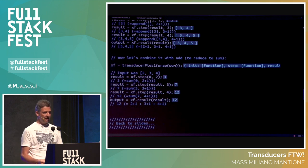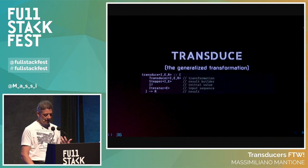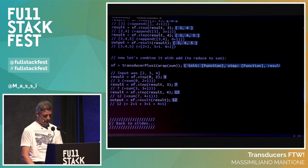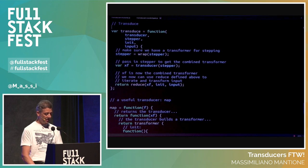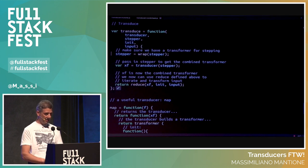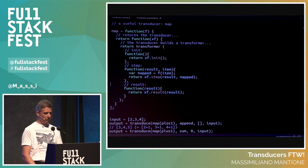What we've seen is that we can compose transformations. The generalized transformation is transduce — a function that takes a transducer (the transformation), a stepper (the final transformation to build a result), an initial value, and an input sequence, and gives us the result. Transduce is simply: wrap the stepper into a transformer, combine the transducer and the stepper, then invoke reduce. Now let's build map as a transducer. Map takes a function f and is a transducer — a function that transforms a transformer — and the key point in its stepper is applying f to the item to get the mapped value, then passing that into the next step.